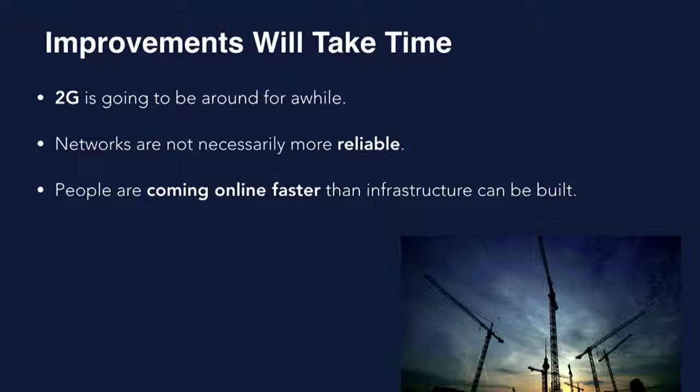We believe improvements on the networking side are going to take some time. 2G is being phased out in the US, which is great news, but it's going to be around in emerging markets for a while. The bigger problem is congestion — if you go to an emerging market and try 3G, you'll often find it's not like 3G here. It's really congested and unreliable. Congestion comes from more and more people using networks, more people getting online for the first time. The infrastructure is not catching up, so we expect congestion issues to continue.